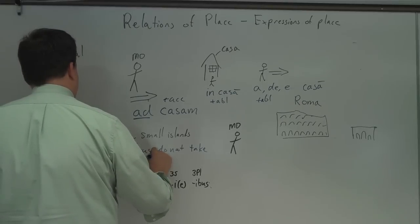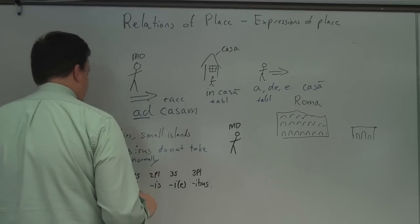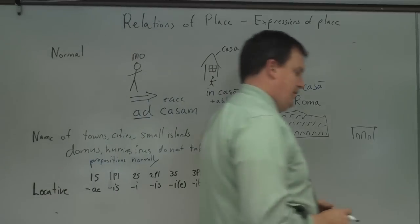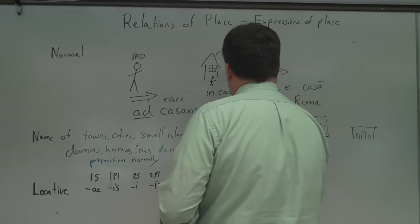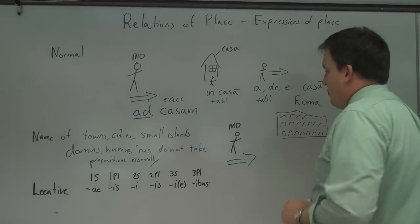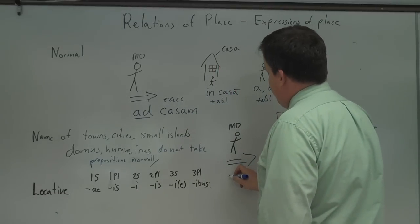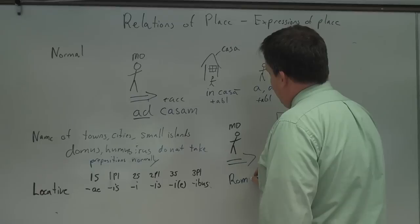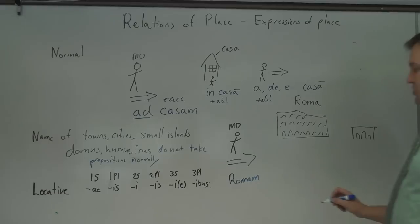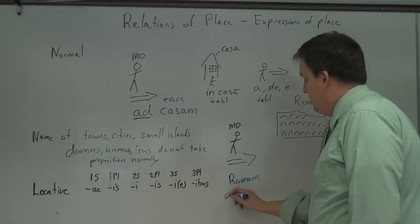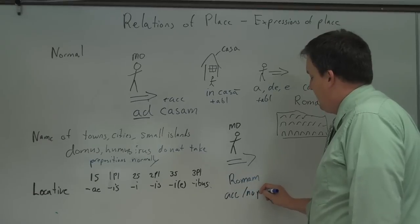I'll show you an example of when they don't normally. For example, we have this wonderful drawing here. Roma. I labeled it for you. Now MD here is very exciting and he is going to Rome. So what you do here is you write Romam. So it's just accusative, no prep.